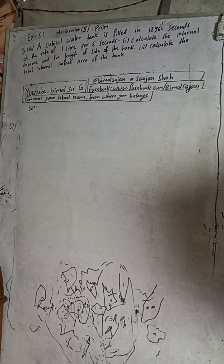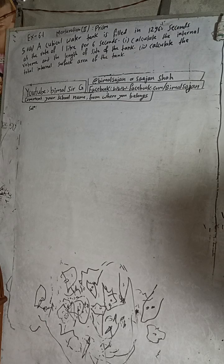The question is 5a: A cubical water tank is filled in 1296 seconds at the rate of 1 liter per second. Calculate the internal volume and the length of the side of the tank, and calculate the total internal surface area of the tank.